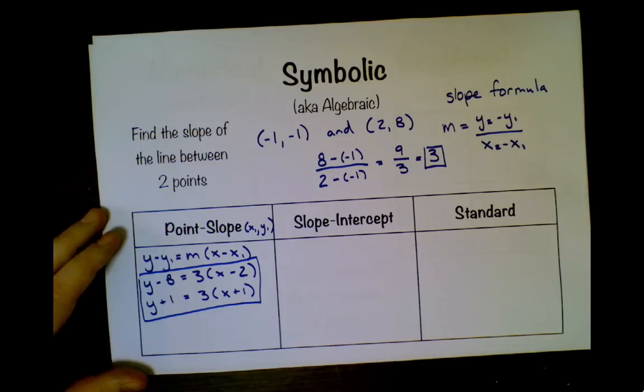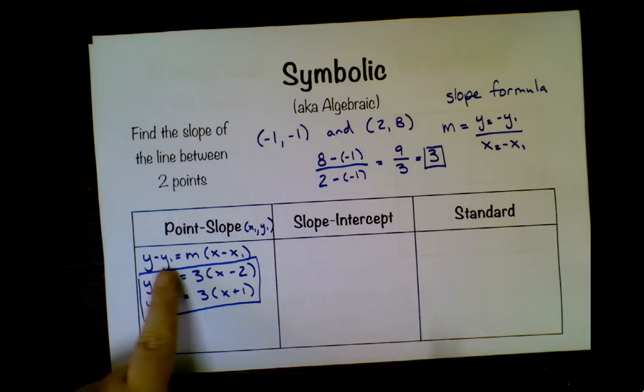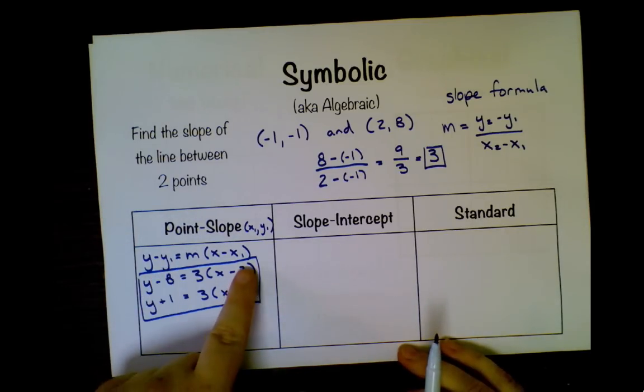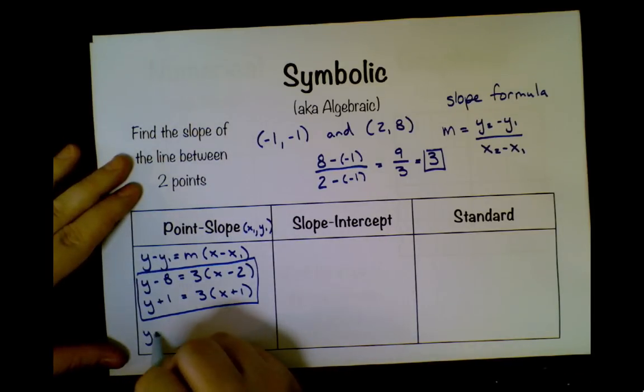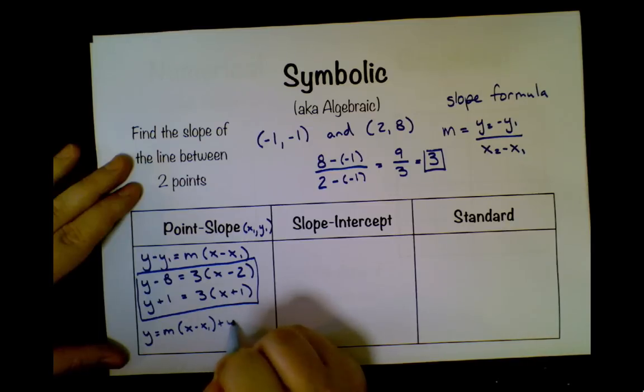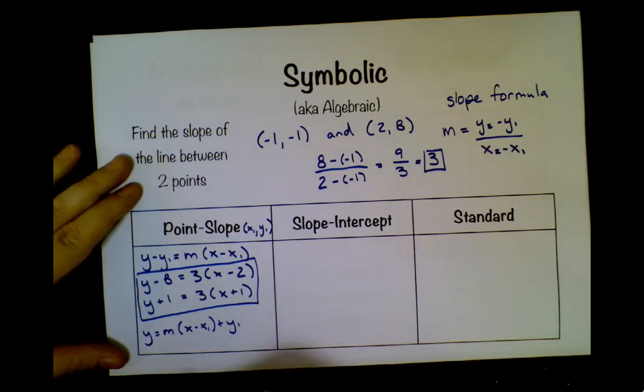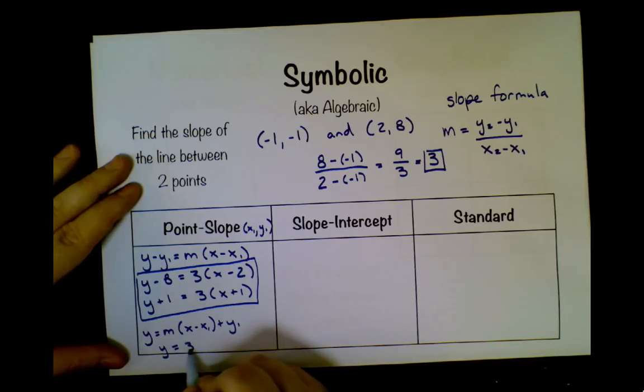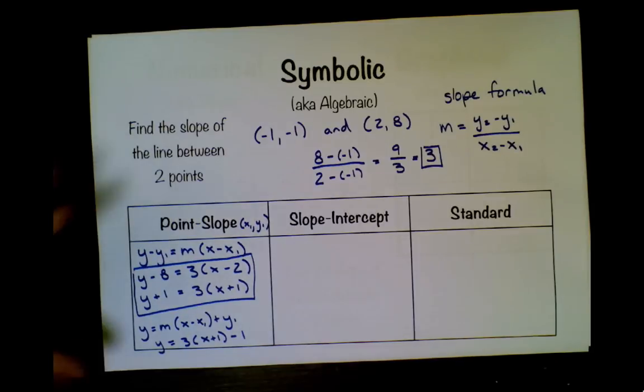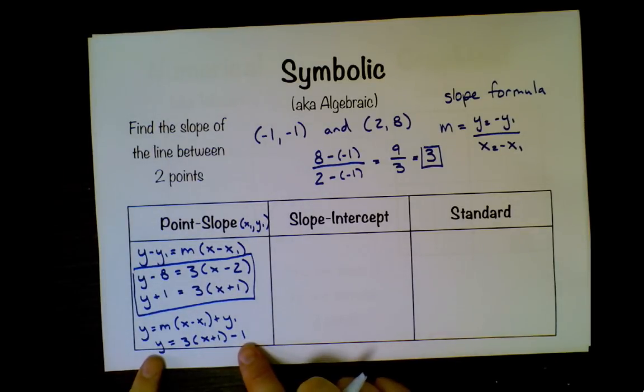Sometimes what people do is they'll take this minus y1 and move it to the other side. Sometimes you'll see y equals m times the quantity (x minus x1) plus y1. An example here would be y equals 3 times the quantity (x + 1) minus 1. It's not exactly point-slope form, although some math books call it point-slope form. But what it is is function form. If you're looking at function transformations, this is actually pretty sweet.